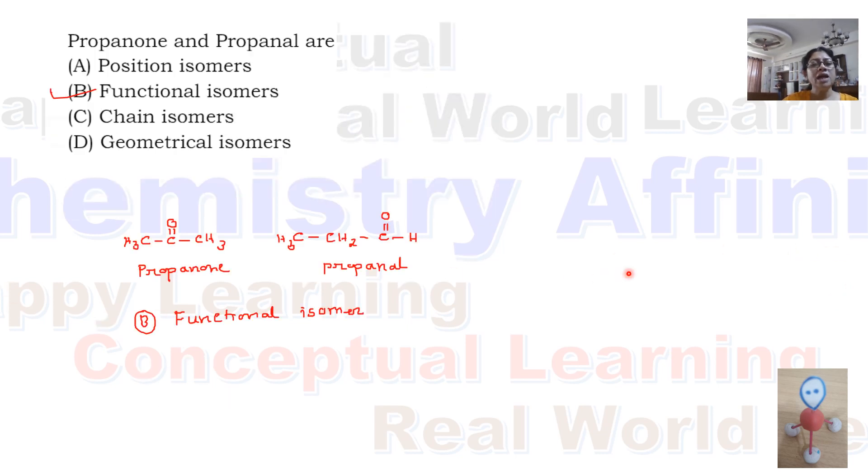Propanone and propanol are which isomers? So if we draw these two structures, we can see it's two different functional groups. That means it's functional isomers. So correct option is B.